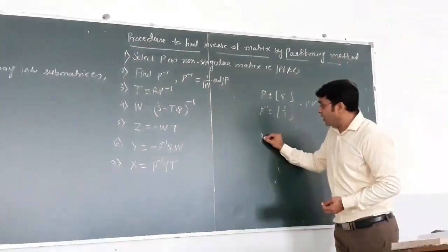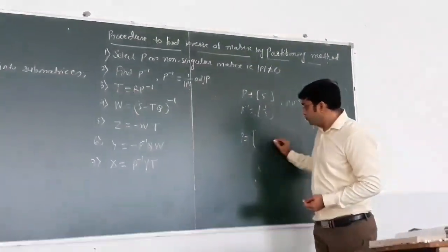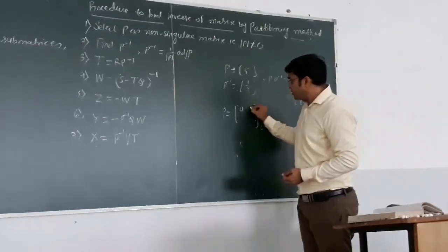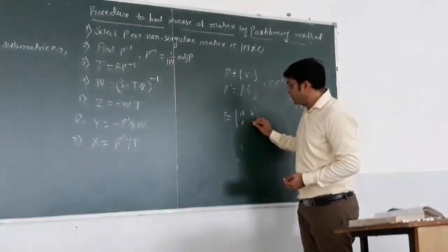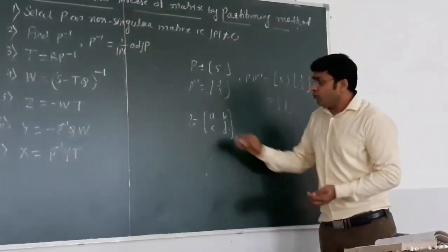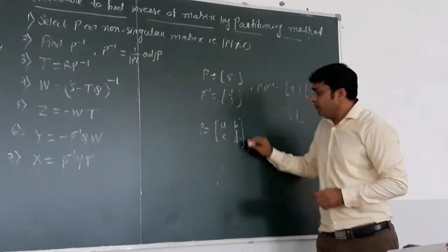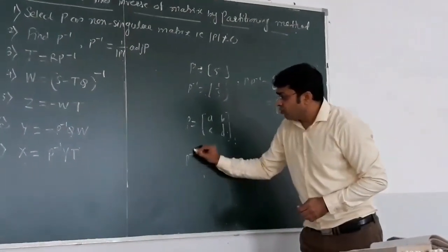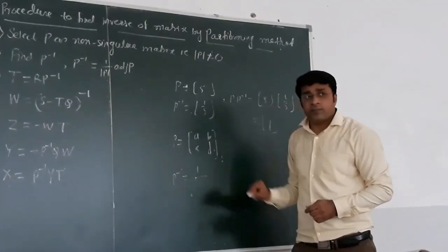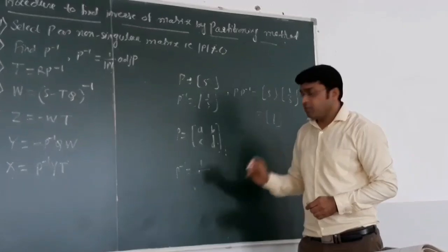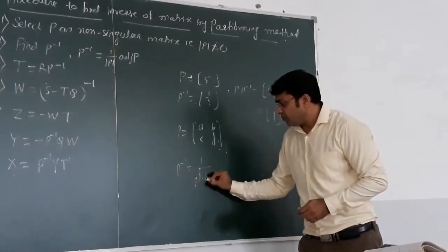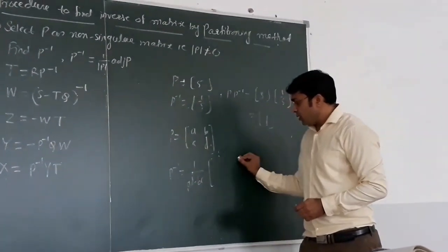If we are having a matrix of order 2 by 2, suppose in general I am writing [[A, B], [C, D]], I want to find out the inverse for this matrix by the adjoint method. The P inverse will be 1 upon determinant of P, that is AD minus BC.